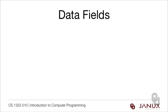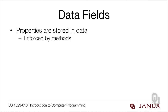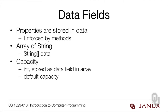Let's talk about what the data fields should be. We know that all properties get stored in data and enforced by the methods. For our data, we want an array of strings — I'll call that 'data'. We also need to know the capacity of the array, stored as data.length, and we need a default capacity for when the user doesn't specify a size. We also need a size that's an int — size changes as you add and remove elements, while capacity is the overall size of the array.